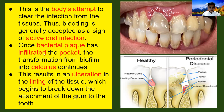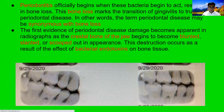Once bacteria and plaque infiltrate the pocket, the formation of biofilm into calculus continues. As a result, ulceration of the lining of the tissue begins to break down the attachment of the gum. This leads to periodontitis — basically gum disease — which is officially defined as when the bacteria begin to act and result in bone loss. This bone loss marks the transition from gingivitis into true periodontal disease, where you go from gingivitis to gum disease with bone loss occurring.